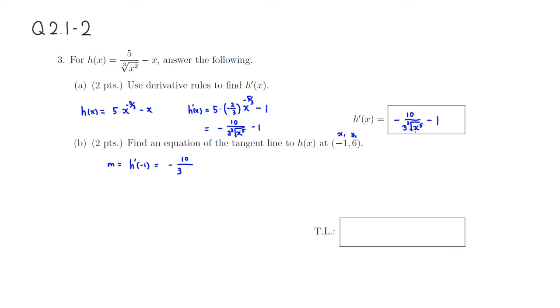So this plug in negative 1, so negative 1 to the fifth is negative 1, and the cube root of negative 1 is still negative 1, so this is actually just negative 1 here, and then minus 1.